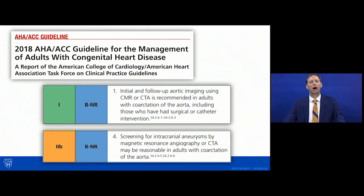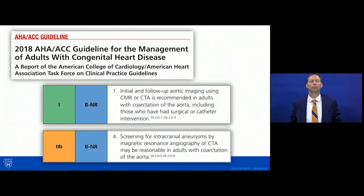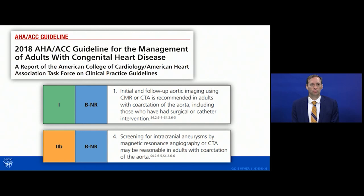For treatment planning, the AHA/ACC adult congenital heart disease guidelines from 2018 recommend advanced imaging with cardiac MR or CT in addition to echo. There is also a recommendation for intracranial imaging to look for intracranial aneurysms — typically MRI — though some argue small aneurysms often don't require intervention. Our practice is to obtain at least one advanced intracranial image in late teenage years or adulthood.